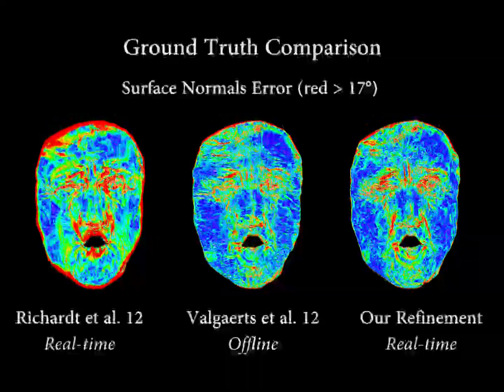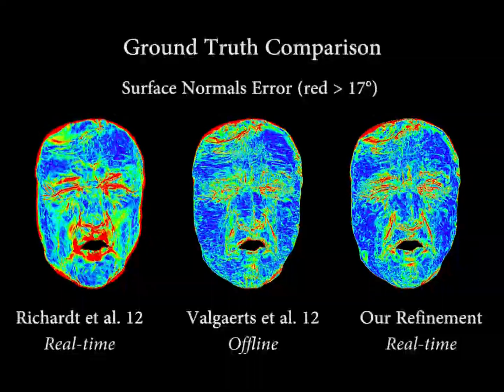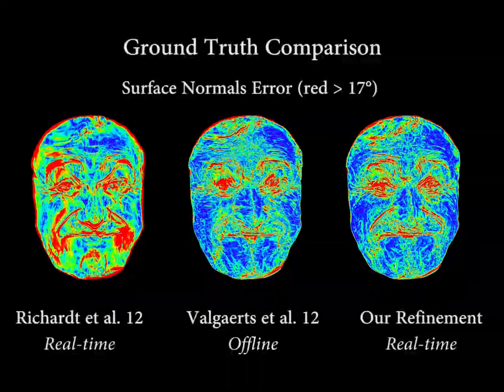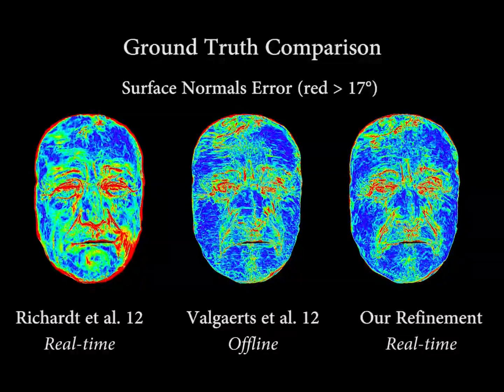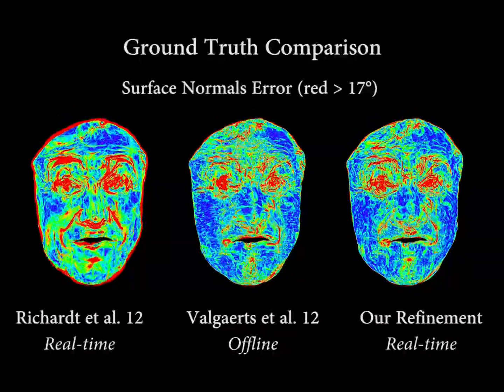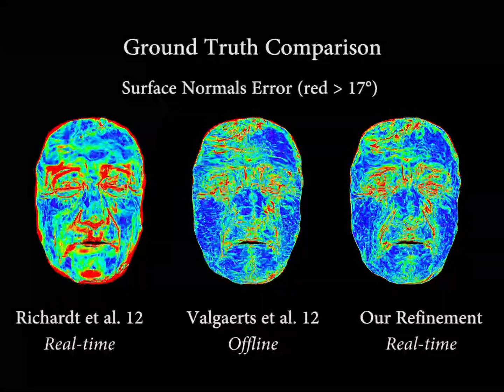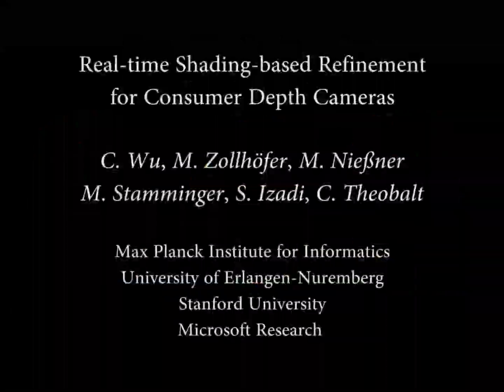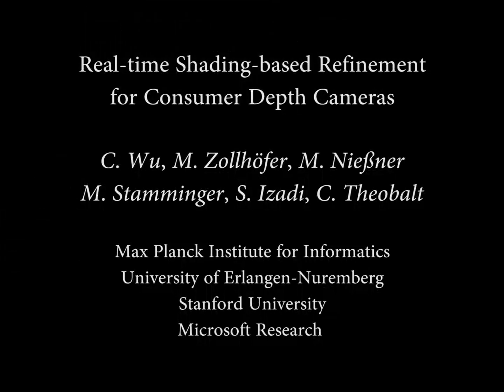The normal error map from these three methods demonstrates that our method produces comparable results to offline methods while running in real-time, and achieves much smaller error compared to other online methods.